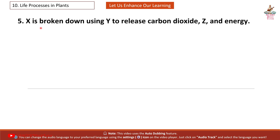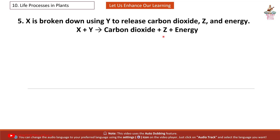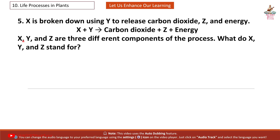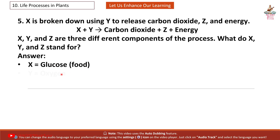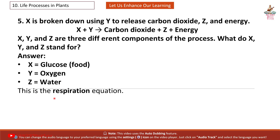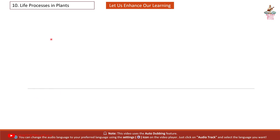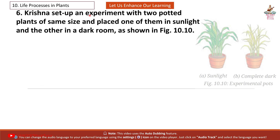Question 5: X is broken down using Y to release carbon dioxide, Z and energy. X + Y → CO2 + Z + energy. X, Y and Z are three different components of the process. What do X, Y and Z stand for? Answer: X = glucose, Y = oxygen, Z = water. This is the respiration equation.